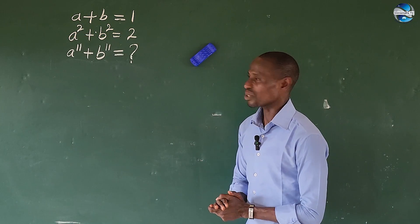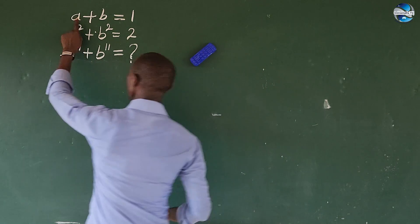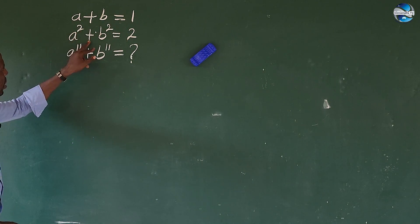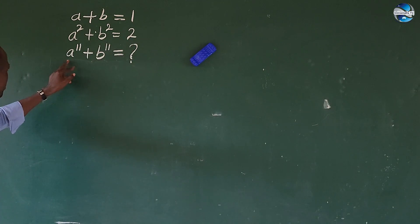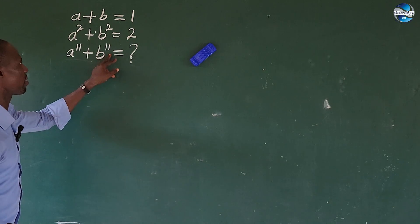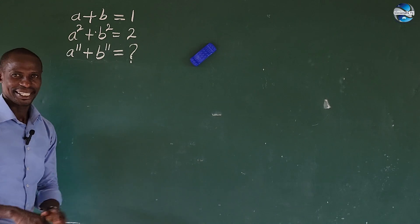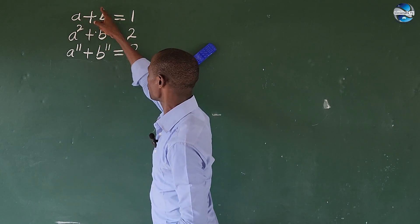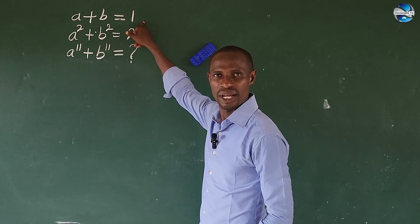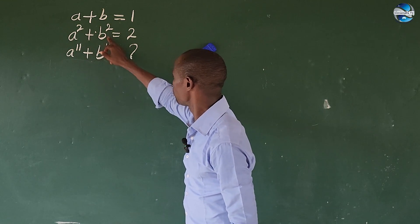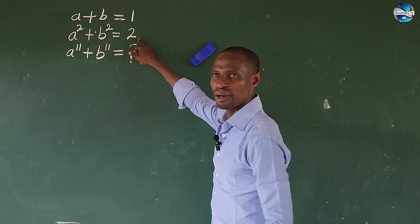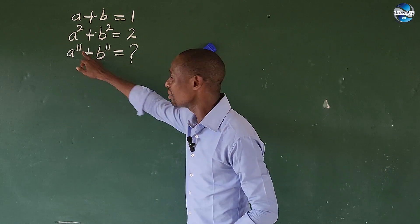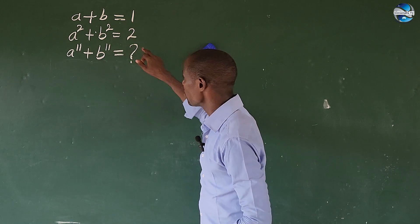Let's look at the question. It reads: a plus b equals 1, and a² plus b² equals 2. We need to find a¹¹ plus b¹¹. Now, you might think the pattern gives 11 directly, but that would be wrong — let's see what the actual solution gives us.